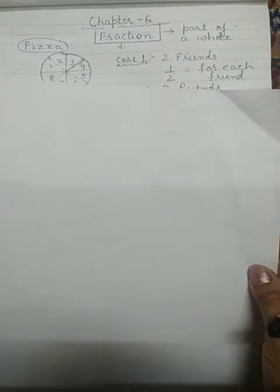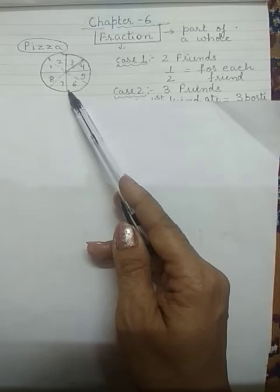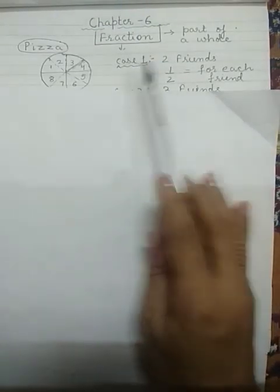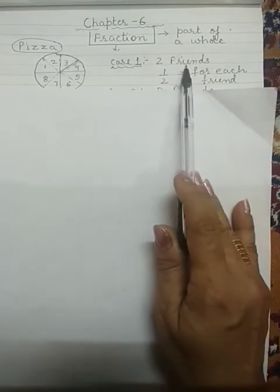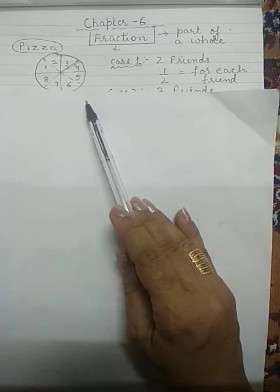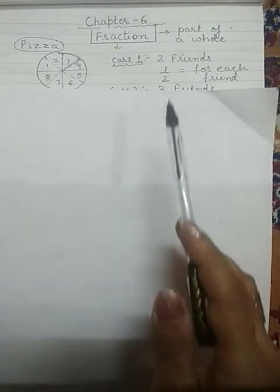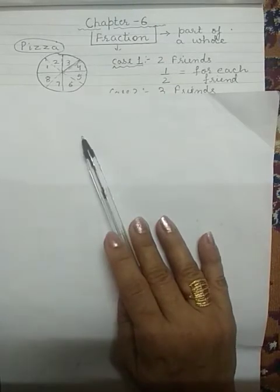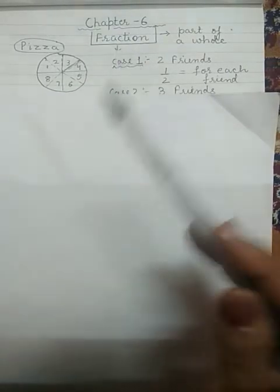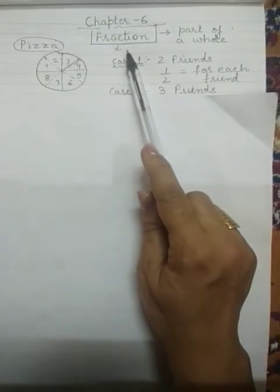For instance, one day you decided to bring one pizza. Here I have drawn one pizza. How many slices are there in the pizza? There are 8 slices total. In the first situation, you and your friend — only 2 people — decided to eat the pizza equally. You are going to make equal portions of one whole pizza. Whenever you are making portions of a whole thing, we are talking about fractions.